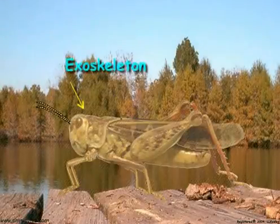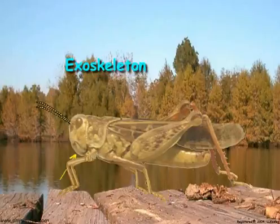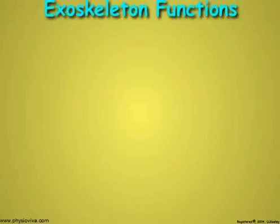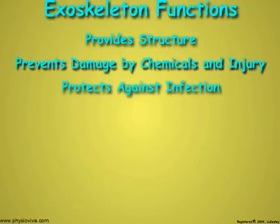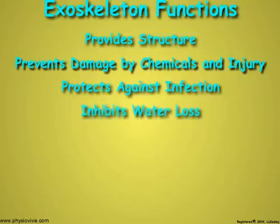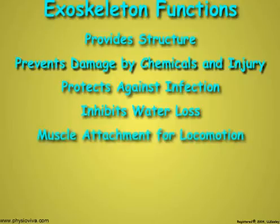In most insects, the integument forms a rigid exoskeleton that surrounds the outer surface of the animal. The exoskeleton serves a variety of functions: it gives the insect structure, prevents chemical and mechanical damage, protects against invasion by parasites and infection by microorganisms, inhibits water loss, and serves as the attachment point of muscles for locomotion.